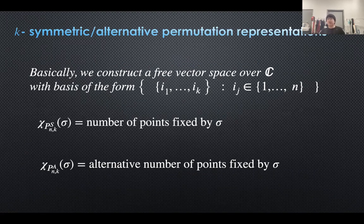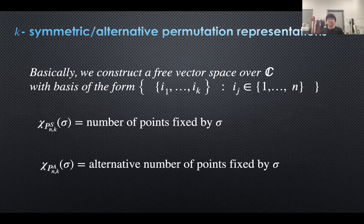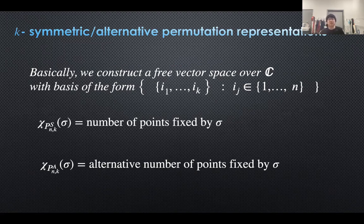Computing their characters is actually very simple. For symmetric permutation representations, the value on sigma is the number of points fixed by sigma — where the points are now sets of numbers, not just individual numbers. For alternative permutation representations, the value on sigma is the alternative count: if sigma acts as an even permutation on a fixed point, we add plus one; if it acts as an odd permutation, we add minus one.